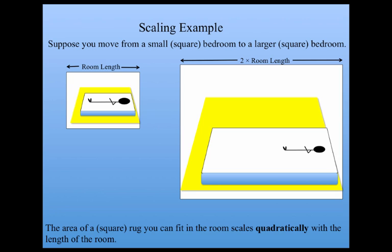Since area scales with the square of the length, the area of the rug you can fit scales with the square of the room length. If you double the size of the room, that means that you quadruple the square feet or square meters of the rug that can fill the room, because two squared is four.